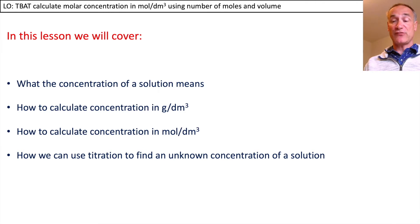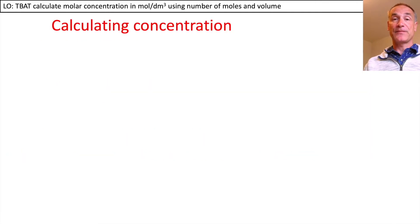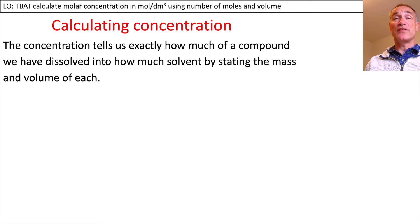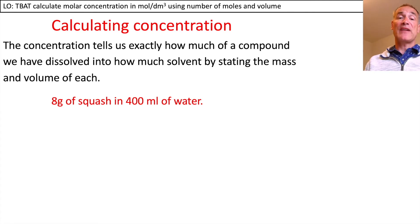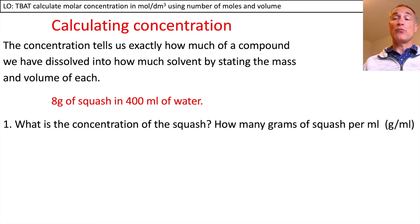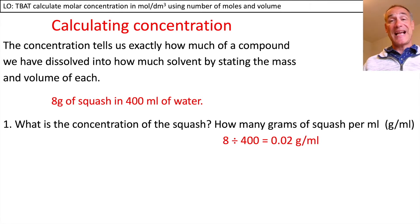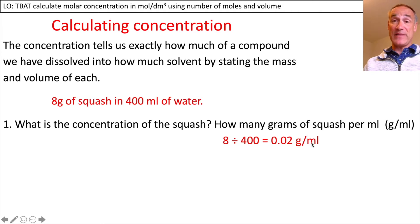The concentration tells us how much of a solid we've dissolved into a solvent, so we have to state the mass of the solid and the volume of the solvent that we've used. For instance we might have 8 grams of squash in 400 millilitres of water. The concentration would be 8 divided by 400, which gives us 0.02 grams of squash in every millilitre of water.